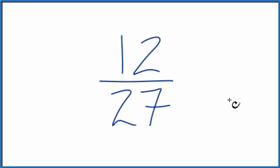So what we need to do is find a common multiple of 12 and 27 so we can reduce this fraction. I know that 3 would go into 12 four times and it would go into 27 nine times. So let's divide the top by 3.